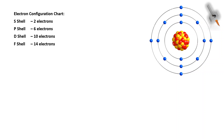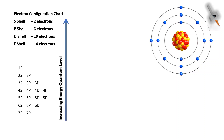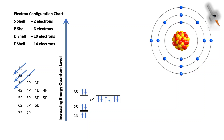Now let's see how the 14 electrons of the silicon atom are distributed into the energy shells and subshells. The 1S will hold 2 electrons, 2S will hold 2 electrons, and then 2P will hold 6 electrons.